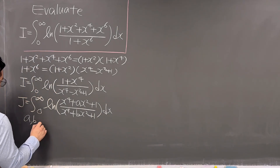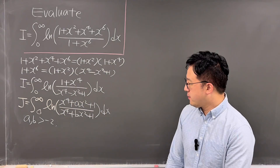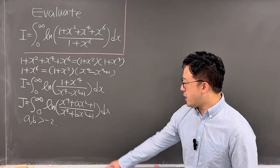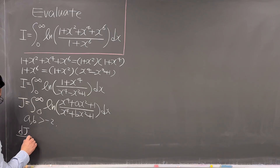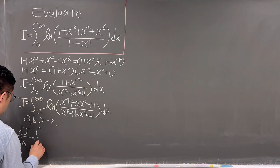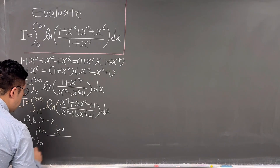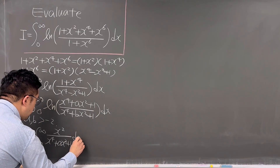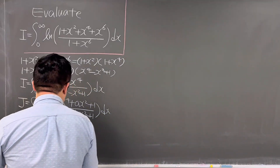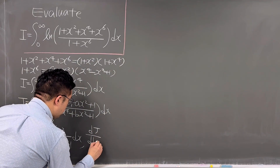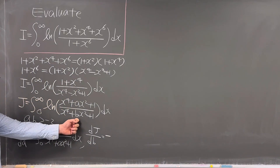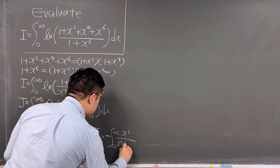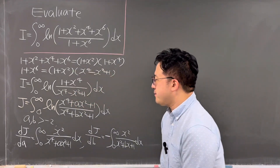Where both a and b should be greater than −2. Eventually we'll plug in the values of a and b from our case. But before that, let's get the derivative of J with respect to a and with respect to b. So dJ/da is going to be the integral from 0 to infinity of x² / (x⁴ + ax² + 1) dx. And dJ/db, we pull a negative sign out, and that is the integral from 0 to infinity of x² / (x⁴ + bx² + 1) dx.